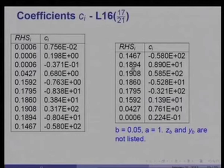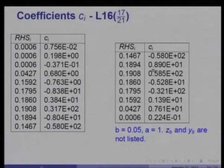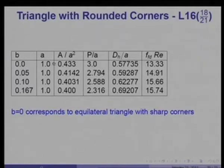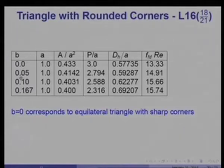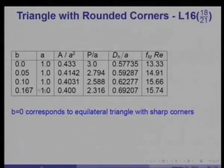To evaluate f·Re, the mean velocity ū must be computed numerically (hand integration is impractical). Results for a = 1 with rounding radii b = 0, 0.05, 0.1, and 0.167 are given, including cross-sectional area/a², perimeter/a, and hydraulic diameter/a. At b = 0 (sharp-cornered equilateral triangle), f·Re = 13.33, consistent with the Kantorovich result. As the rounding radius increases, f·Re increases when based on hydraulic diameter, which itself grows with rounding radius.